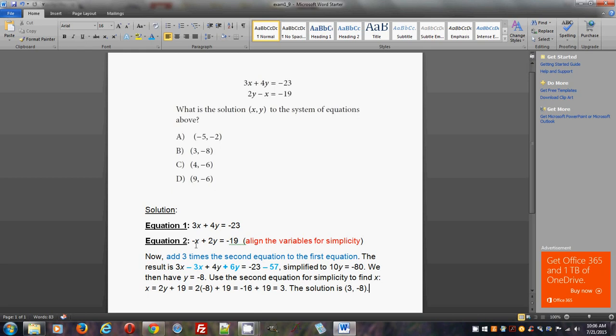Now, so now that you've aligned them vertically, you will add three times the second equation to the first equation. Now the reason why you add three times is that you want to eliminate one variable so that you can find another. You're not going to be able to work with two variables and find the solution. You need one variable, one unknown, and everything else known. Otherwise, you can't find it.